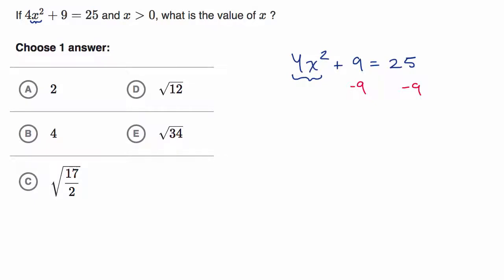And so we are going to be left with, on the left-hand side, the nines cancel out, and so you just have 4x² is equal to, and on the right-hand side, 25 minus 9 is equal to 16.